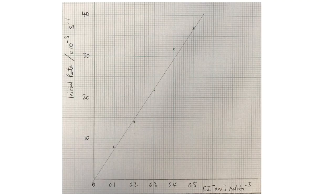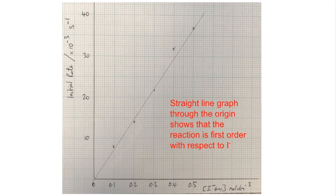I've plotted the graph and it looks like that. You can see very clearly that we have got a straight line graph through the origin, showing that the reaction is indeed first order with respect to the I⁻ ion concentration.